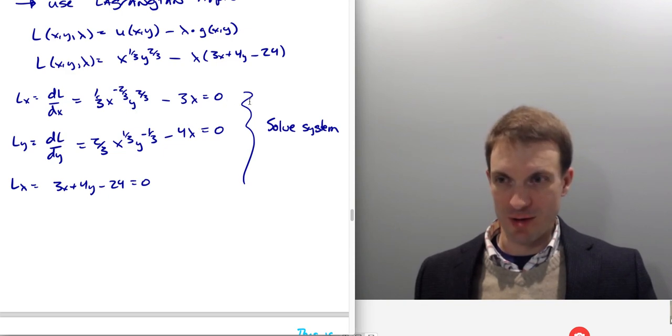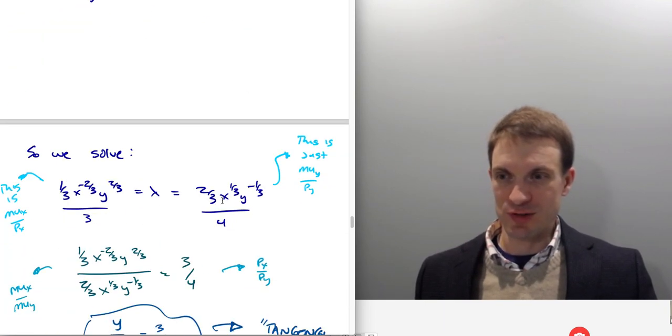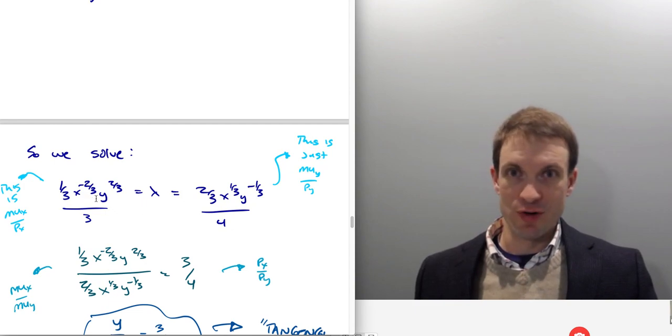So move this to the other side, divide by three, it's gonna be this stuff divided by three. Move this to the other side, divide by four, this stuff divided by four, and that gives us this. Those are both equal to Lambda, so I'll set them equal to each other. Notice, as I've written this here, this is literally my marginal utility of X divided by the price of X.